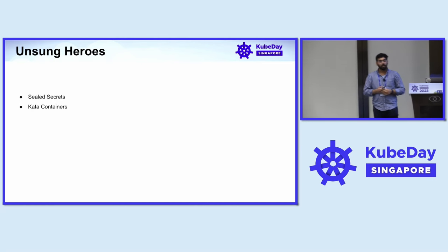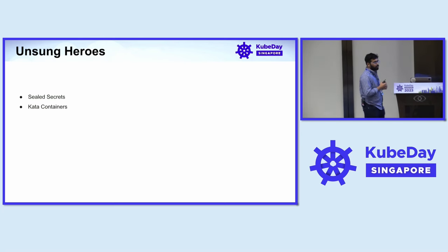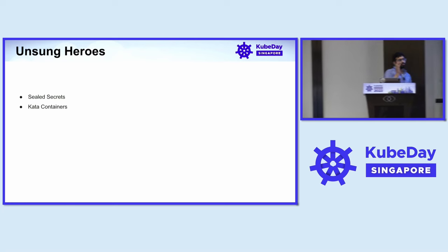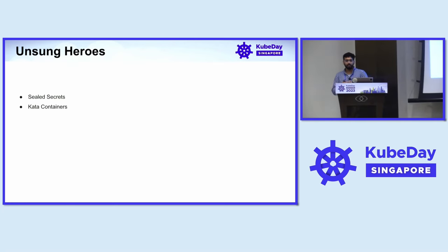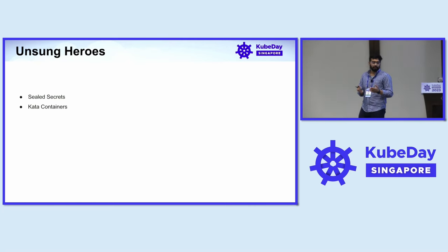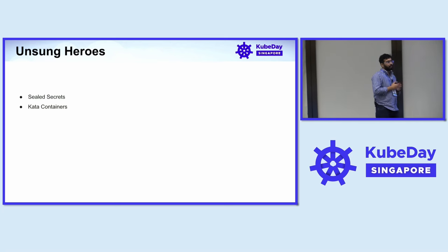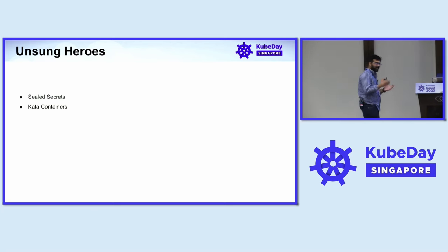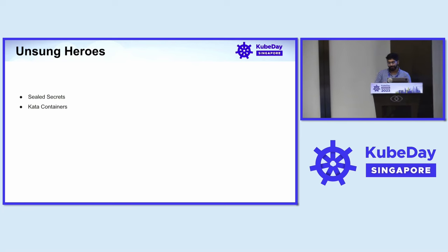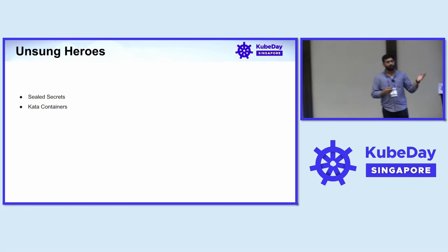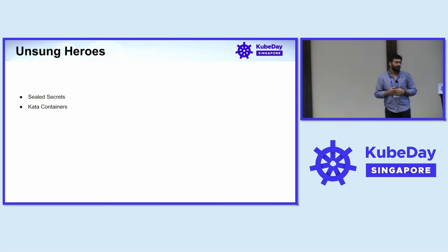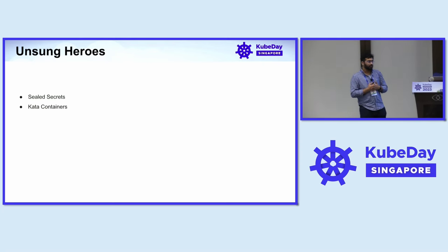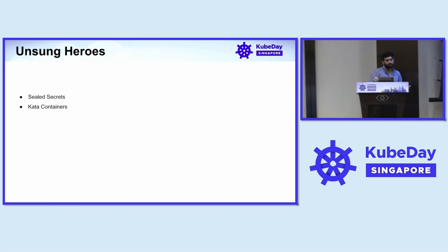Some unsung heroes: Sealed Secrets, as discussed in the previous talk. Kubernetes secrets are not encrypted — they are just encoded, and encoded is not equal to encrypted. Sealed Secrets were developed by Bitnami and nearly everybody is using them. Kata Containers we are using for isolated hardware — just for two containers for an internal use case. You just need to define a RuntimeClass and mention the runtime like gVisor, then run Kata Containers.